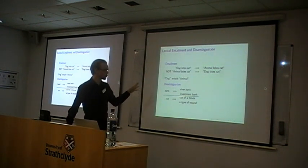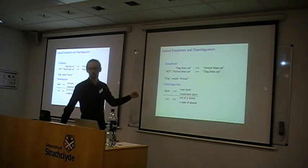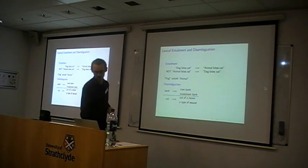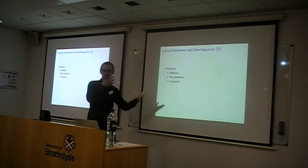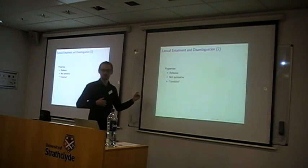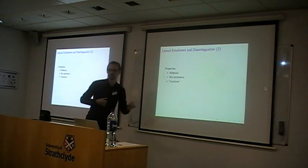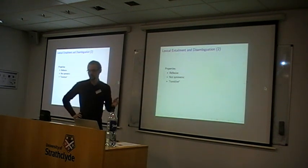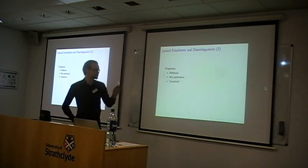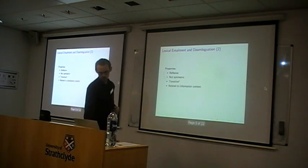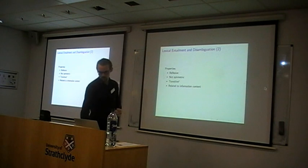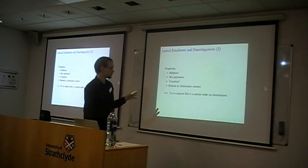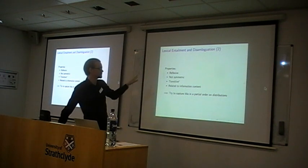So that is kind of what we'll be looking at here — this information content and how you can represent this on distributions. If you see these properties, they are reflexive — anything entails itself — it's a not-symmetric relation, and it's transitive. I put a star there because you could also be talking about partial entailment, where transitivity becomes a bit wonky. But in this case we'll be talking about actual complete entailment. This points towards trying to use a partial order that is related to information content.